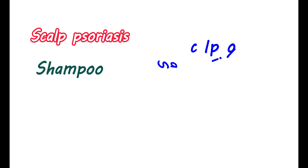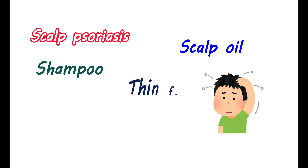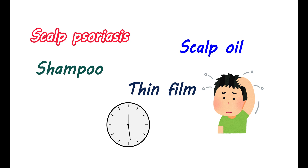For treating scalp psoriasis, you can use either scalp oil or shampoo. If you are using oil, apply it as a thin film onto the scalp. It should be massaged thoroughly into wet hair or scalp. You should leave it on overnight or for at least 4 hours, and cover the scalp with a shower cap. You can then wash with shampoo after at least 4 hours.